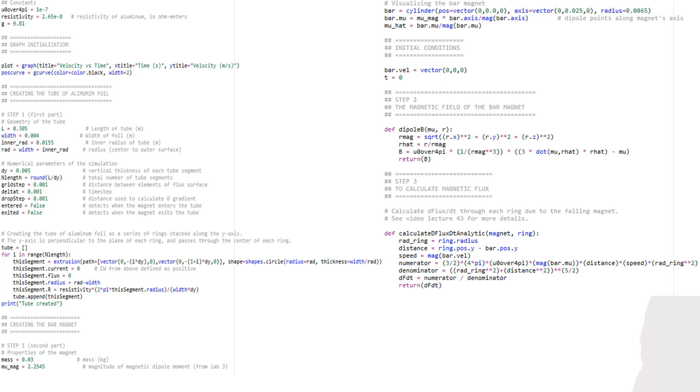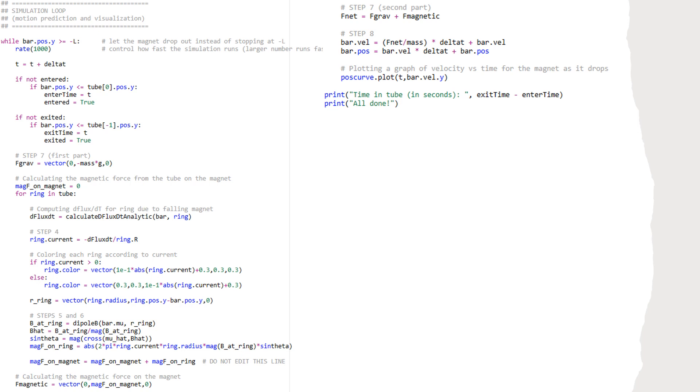Now going to the top right, this code was given to create the bar magnet. We then used our dipole moment function from lab 3 in step 2 and created a function to calculate the magnetic flux through each ring due to the magnet in step 3. This formula was given in pre-lecture videos.